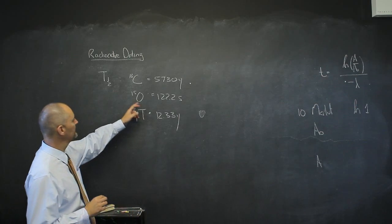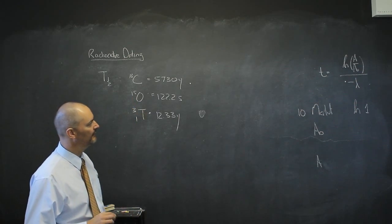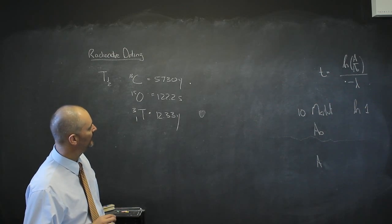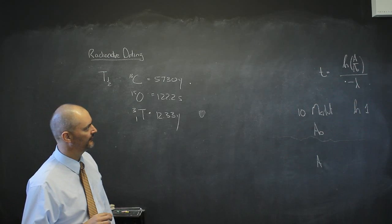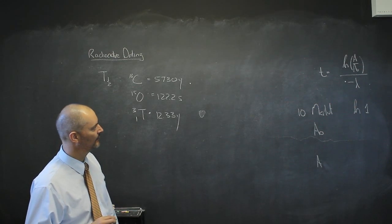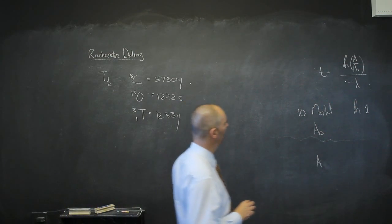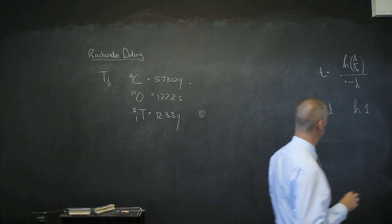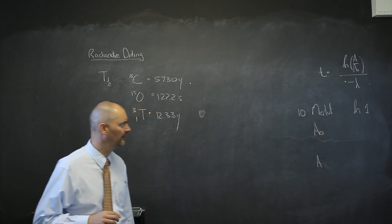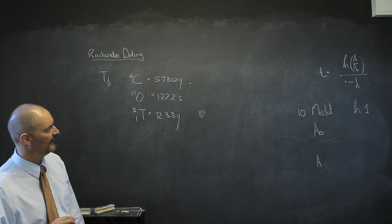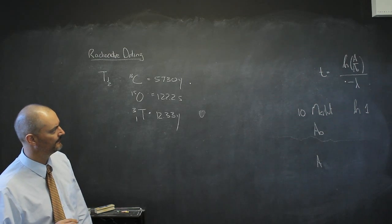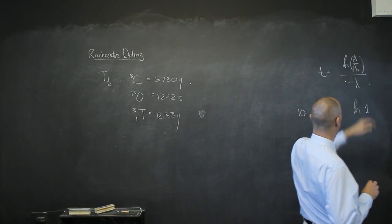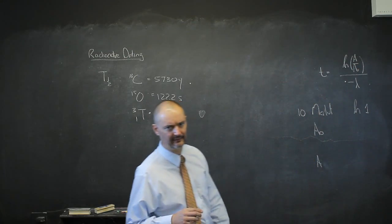On the other hand, if I look at oxygen-15, it's only 120-odd seconds. There will be almost nothing left today. The activity today is almost going to be 0. I'm looking at the natural logarithm of about 0 divided by what it was then. The natural logarithm of 0 is not defined. As that number tends to 0, the natural logarithm tends to negative infinity.